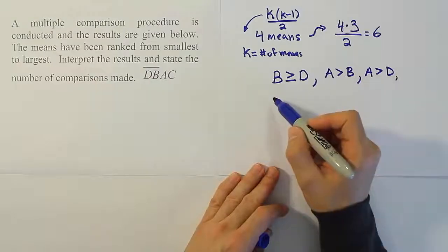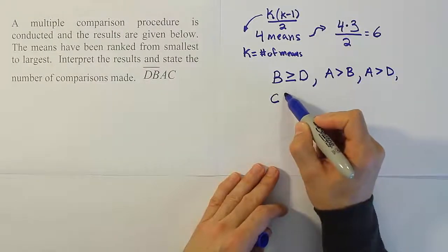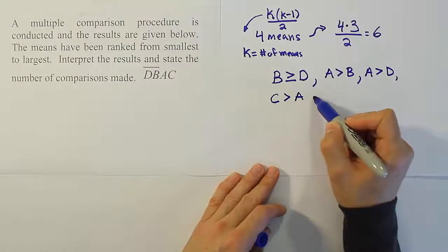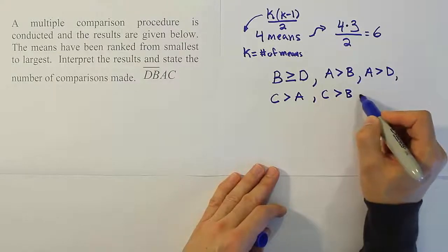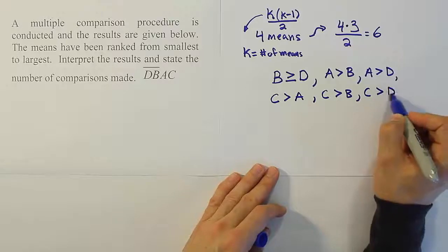And then we can go on to say that C is greater than A, and C is greater than B, and also C is greater than D.